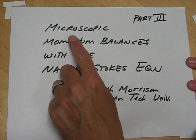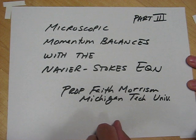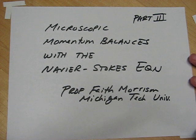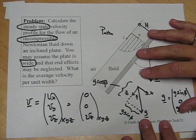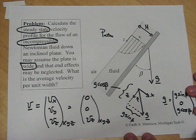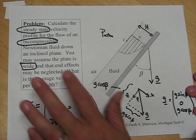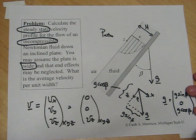We're finishing up an example of applying the microscopic momentum balances to a steady flow. The flow we've been considering is flow down an incline plane. So this is the problem: calculate the steady state velocity profile for the flow of an incompressible Newtonian fluid down an incline plane.